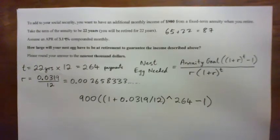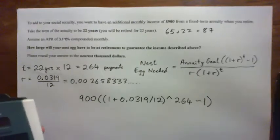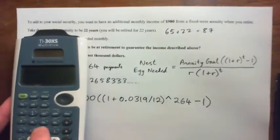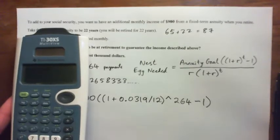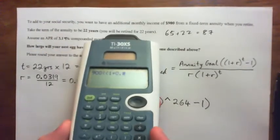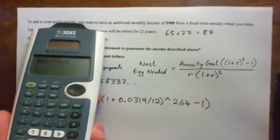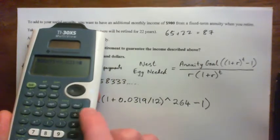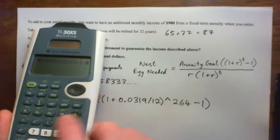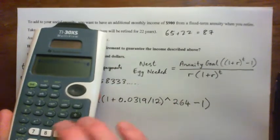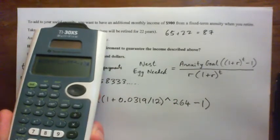Now, I can put that in the calculator and kind of save that number and then divide by the bottom. Or, to be really fancy, I could do a one line calculator entry. Well, let me just start with the top anyway. So, 900, parenthesis, parenthesis, 1 plus 0.0319 over 12 to the power of 264 and then minus 1. And then press enter.